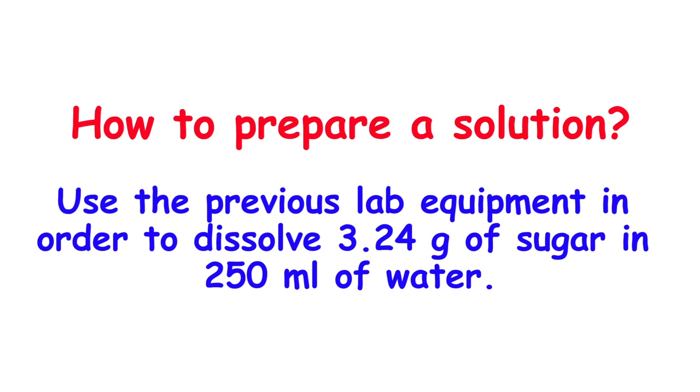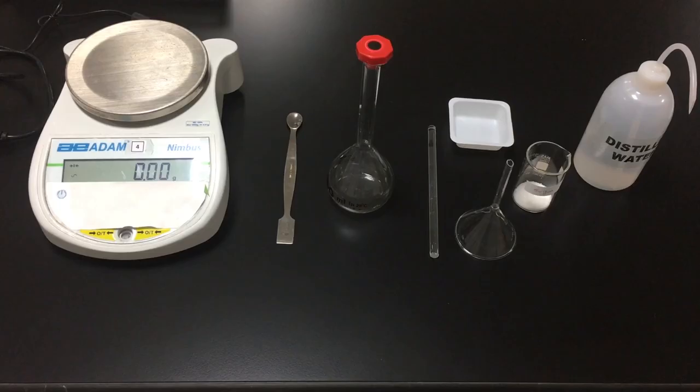How to prepare a solution by dissolving 3.24 grams of sugar in an exact volume of 250 milliliters of water. Let's set our materials. We need a digital balance, a spatula, a volumetric flask, a stirring rod, weighing bottle, filter funnel, a beaker, and a plastic wash bottle.